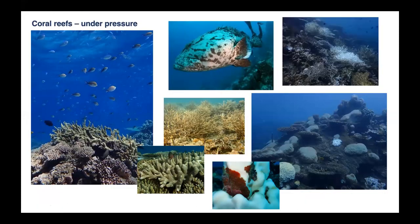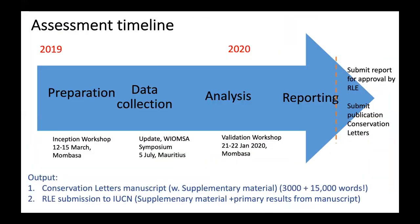Coral reefs are really under pressure around the world. We all know from warming and climate scenarios, and also local pressures on reefs, that they are one of the prime ecosystems globally that is under threat and really at higher risk of collapse. So it's a very strong interest of ours to see how well this approach handles that and identifies the level of risk that reefs are facing at the scale that we're looking at them. This slide shows some of the bleaching impacts that are common in the Western Indian Ocean.